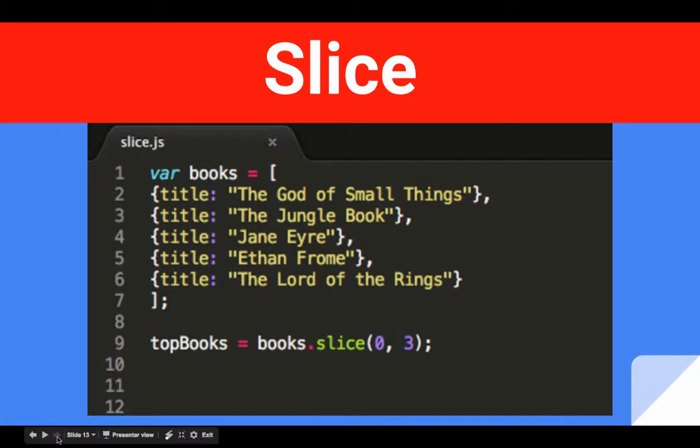Imagine that you're working on a site and you have a list of books. Here's a very small list of books. It's an array. If the syntax looks strange to you, it's just the formatting. I've put each element of the array, which is an object, on its own line to make it a little easier to see. This is an array nonetheless with five items, five objects with the title of each book.